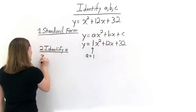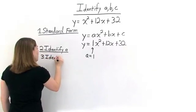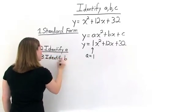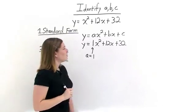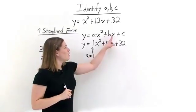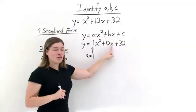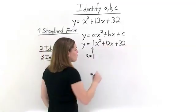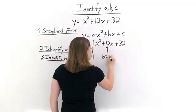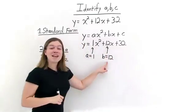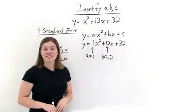Now let's find b. Remember, b is the coefficient or the number in front of our x term. Here's our x term, and in front of our x term we have the number or the coefficient 12. So that means that b is equal to 12 — it's the number in front of x.